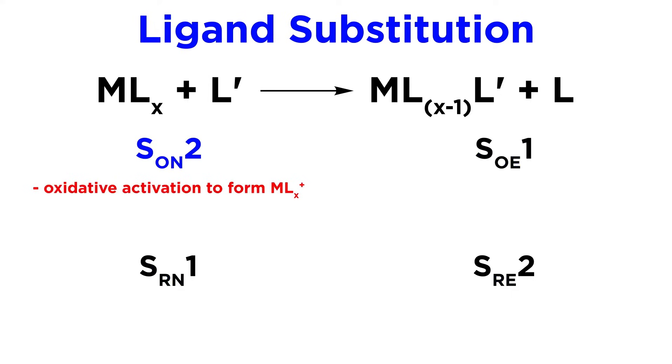First, oxidative activation results in MLx+, followed by association of a nucleophilic ligand and then subsequent loss of another ligand. This is called SON2, S for substitution, O for oxidative activation, N for nucleophilic ligand, and 2 for bimolecular intermediate, like the bimolecular transition state in SN2.